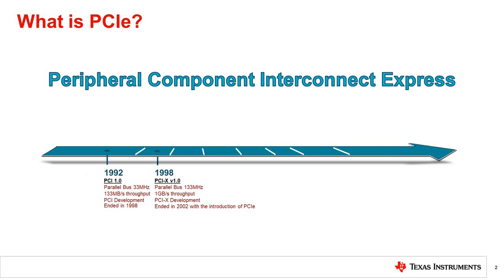The predecessor to PCIe is PCI. The PCI bus existed on many motherboards in the 90s, along with a few other expansion bus technologies. Motherboard expansion bus standards are designed for communication between the CPU and devices plugged into the motherboard's expansion slots. Initially, all expansion bus standards used a parallel bus, which means that data is sent and received over multiple channels.